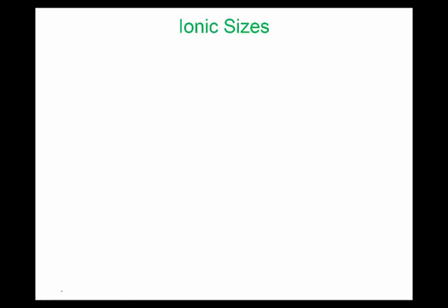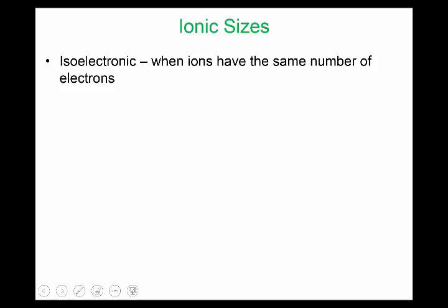So, ionic sizes — let's look at a couple of examples. There's a term called isoelectronic, which is when ions have the same number of electrons. For example, the fluoride ion, neon, and sodium are all isoelectronic. The fluoride ion has ten electrons, the neon atom has ten electrons, and sodium with a plus one also has ten electrons. This is called isoelectronic — when you have different elements but the same number of electrons.